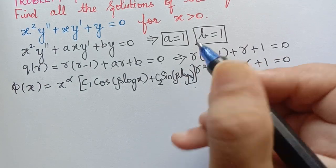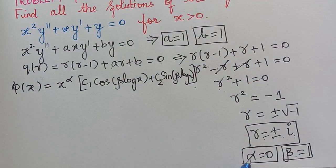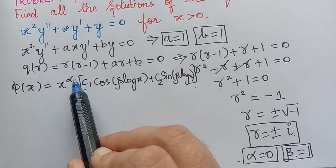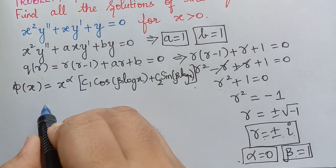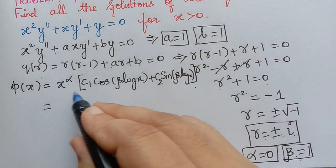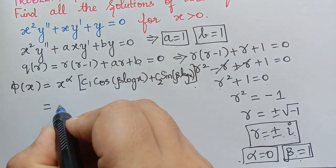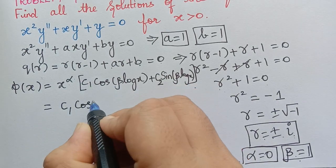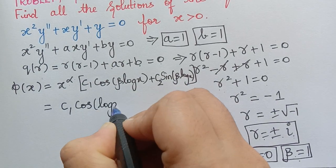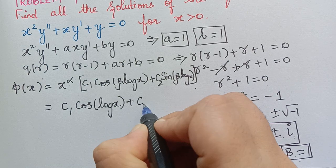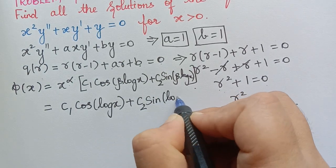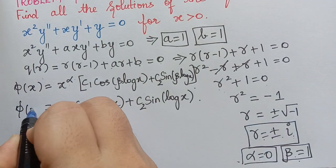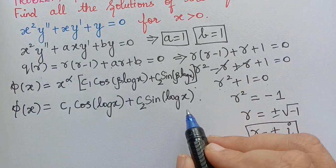Since α = 0, x^0 = 1. Substituting α = 0 and β = 1, the general solution becomes φ(x) = c1·cos(log x) + c2·sin(log x), since the value of β is equal to 1.